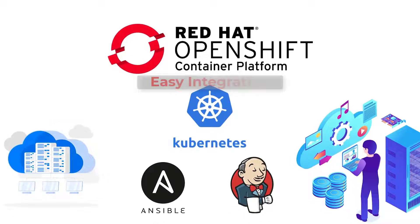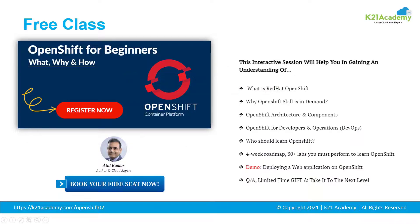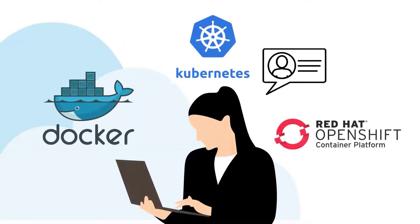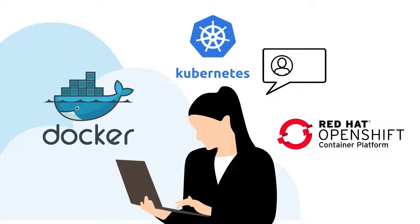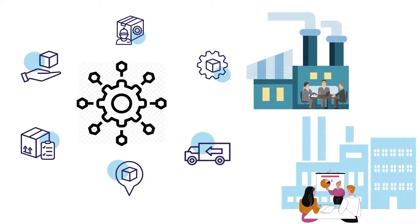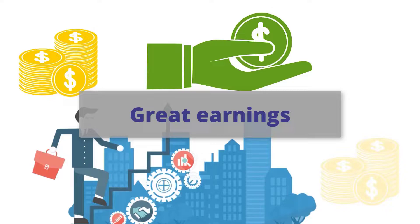To know more about Red Hat OpenShift, you can register for a free class at k21academy.com/openshift02. Our Docker, Kubernetes, and OpenShift experts will be talking about why more than 50 percent of the Fortune 100 companies are now using OpenShift to run microservices and containerized applications, along with job opportunities and how much you can earn working on OpenShift.